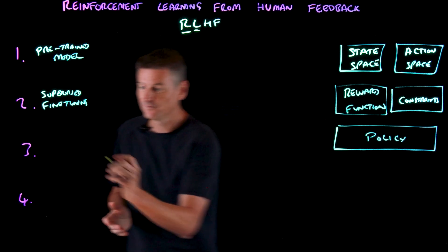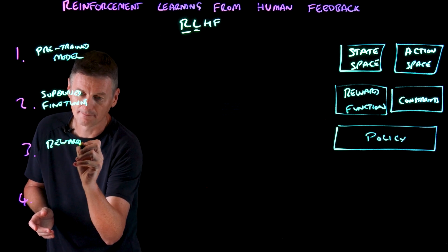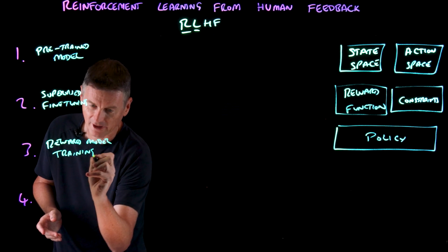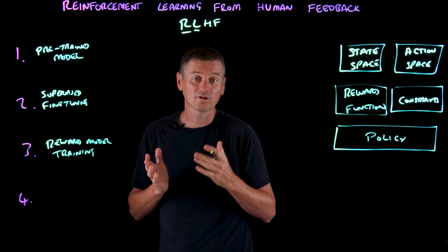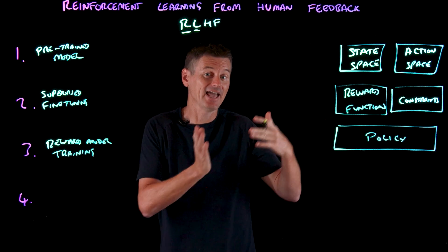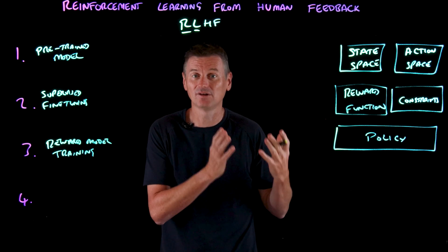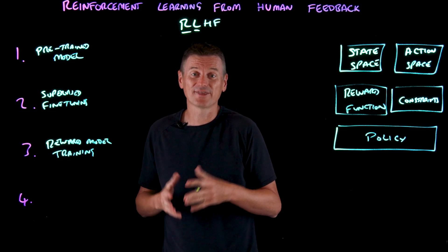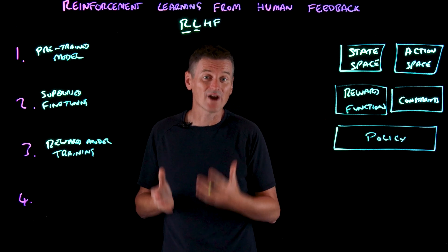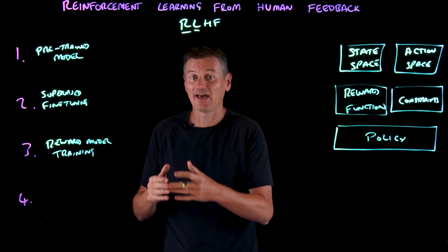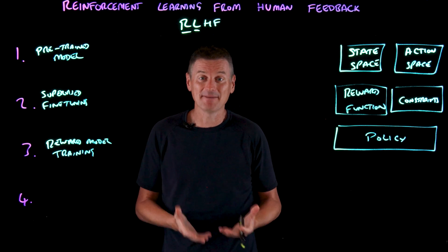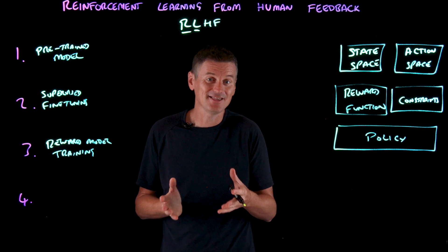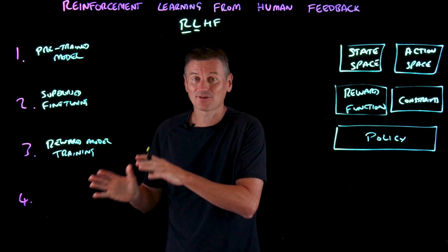Then we move to reward model training. We need a reward model to translate human preferences into a numerical reward signal. The main purpose of this phase is to provide the reward model with sufficient training data — direct feedback from human evaluators — that helps the model learn to mimic how human preferences allocate rewards to different kinds of model responses. This lets training continue offline without the human in the loop.